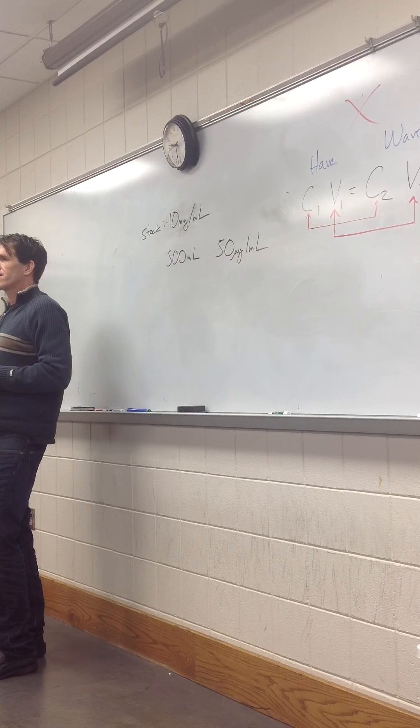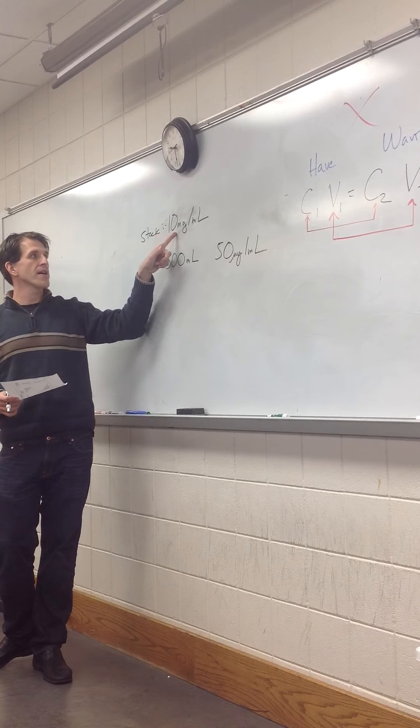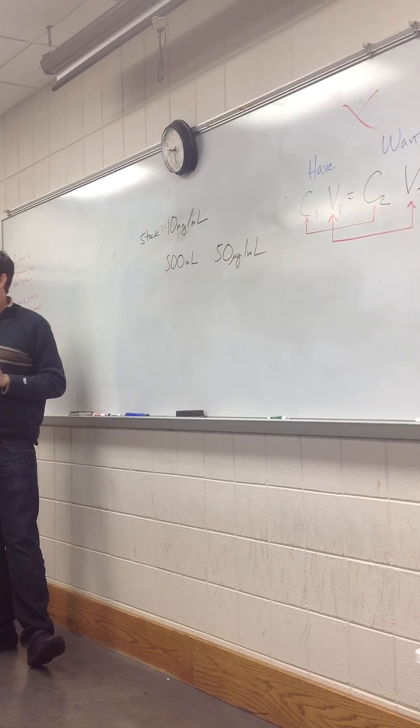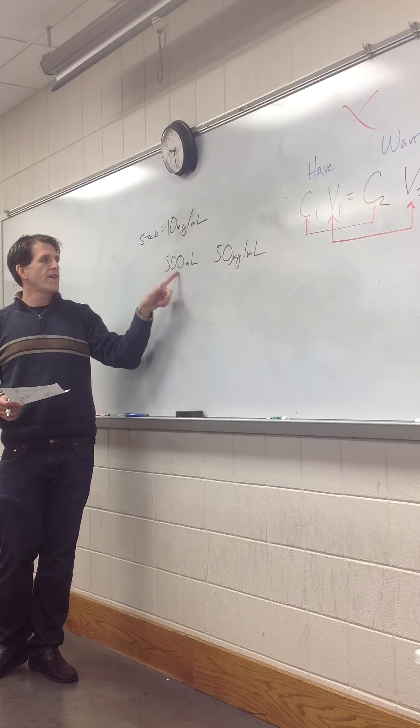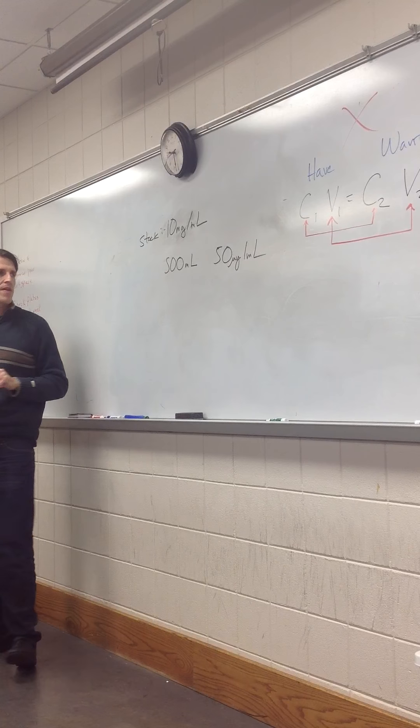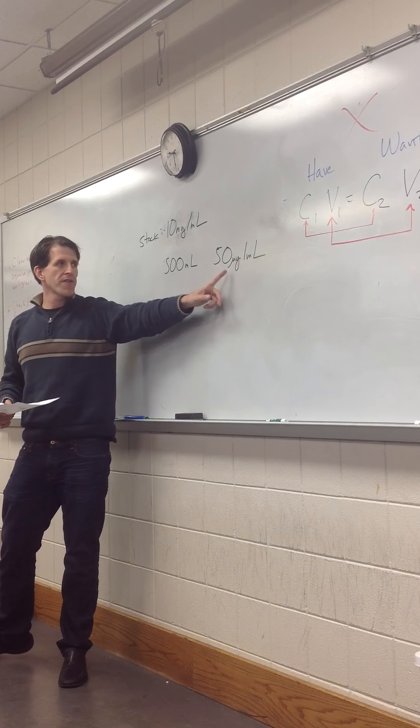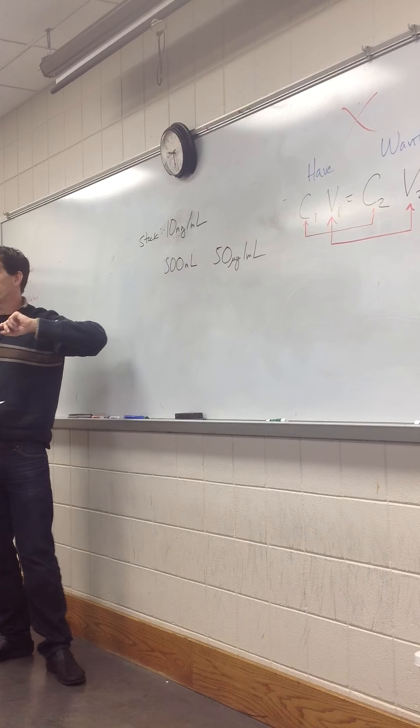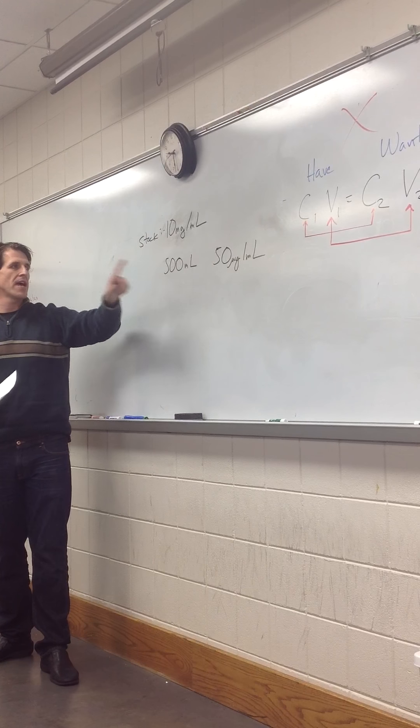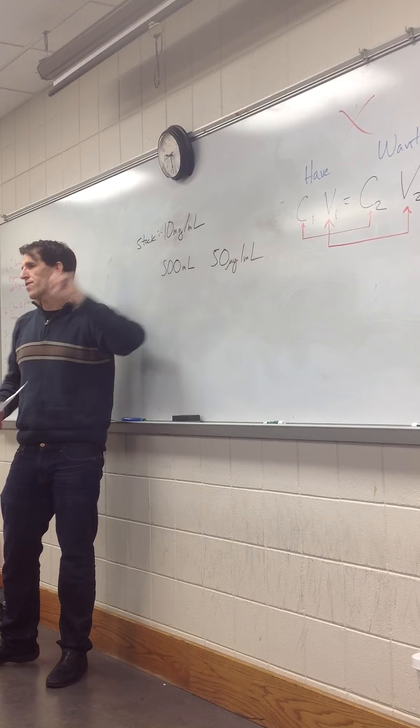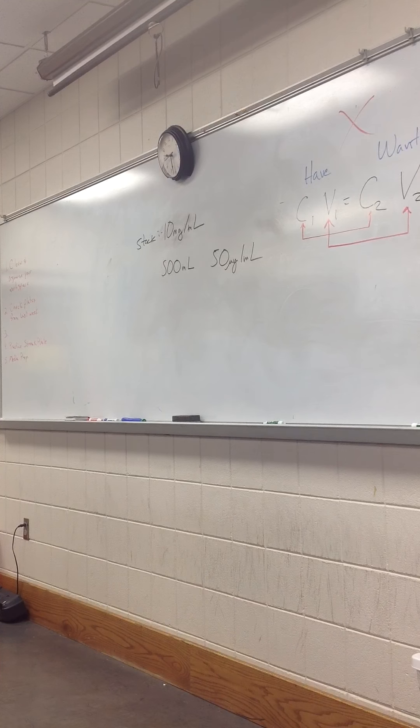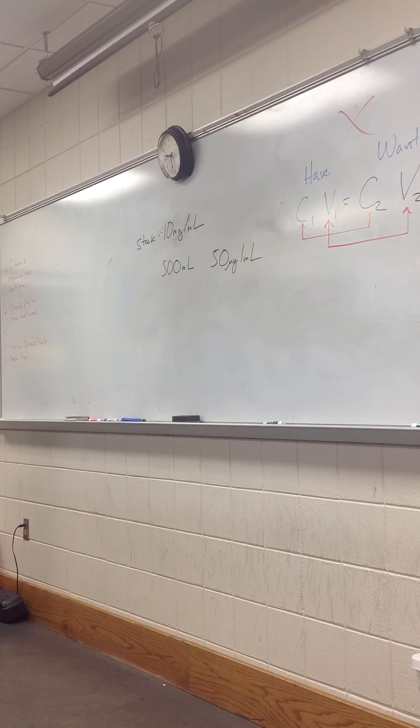You understand the question? Okay, this is my stock, 100, excuse me, 10 milligrams per milliliter. I've made 500 milliliters of a medium that I'm going to pour for plates. I want this as my final concentration of my erythromycin. How much of this do I need to add to this to get this? Okay, I'll give you about a minute to set this up, and then we'll work it out as a group.